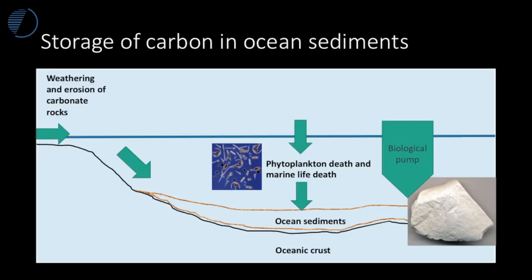Here we have the biological pump, and the build-up of many millions of coccoliths which have formed chalk. This is a major carbon sink in the ocean sediments. We also have carbonates on land — all kinds of limestones, zoolytic limestones, and chalk — which are weathered and pass into the ocean, where sediments continue to build up on the seafloor.